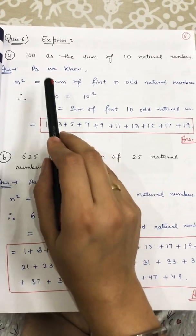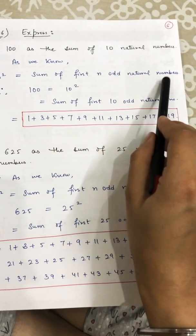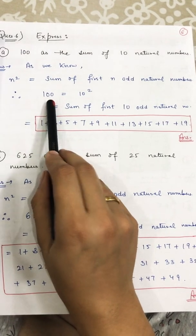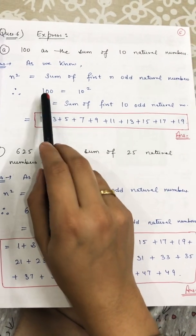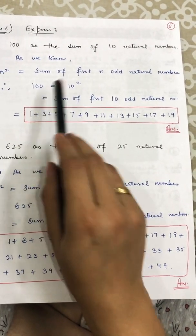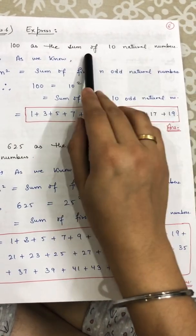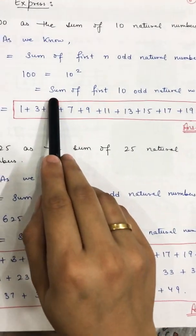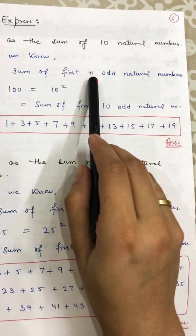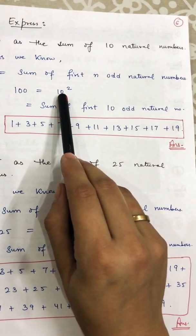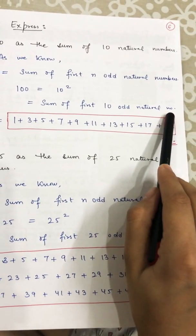Write it as: as we know, n² = sum of first n odd natural numbers. Therefore, 100 = 10² = sum of first ten odd natural numbers. In place of n, write 10: sum of first ten odd natural numbers.